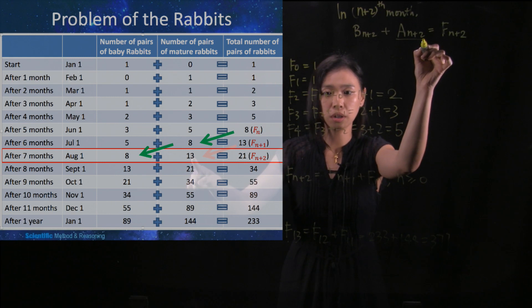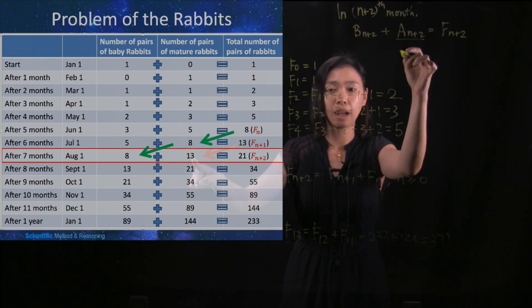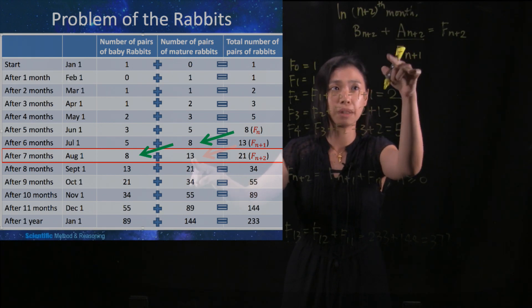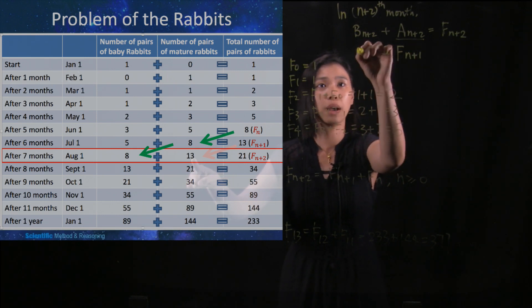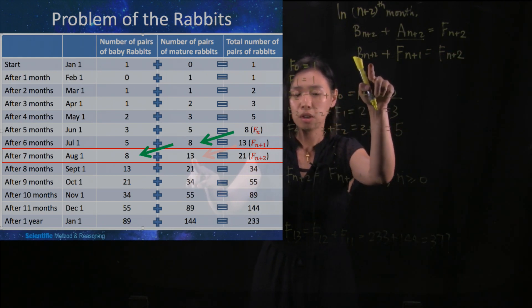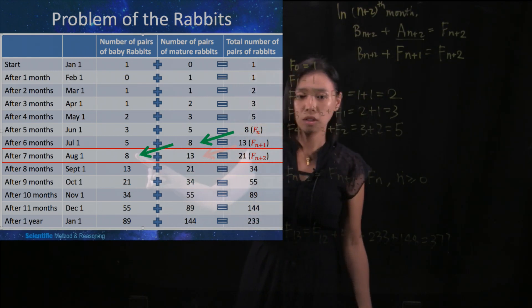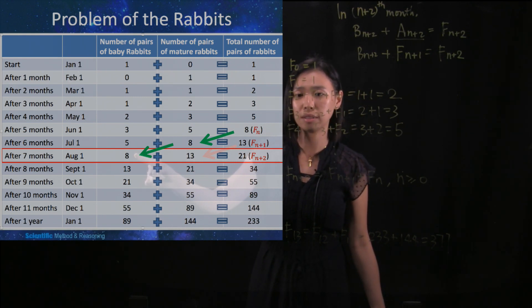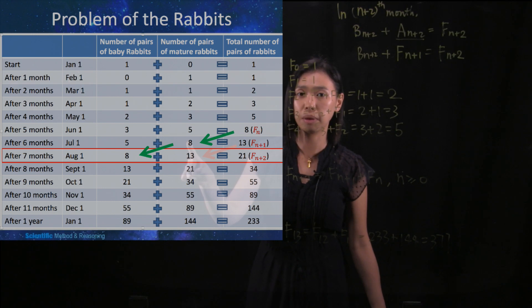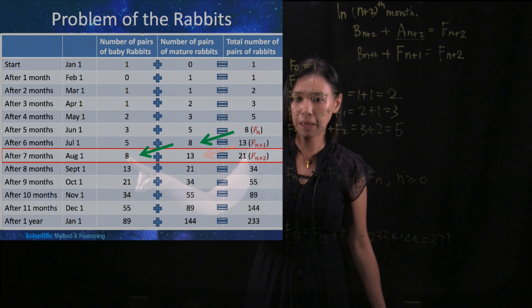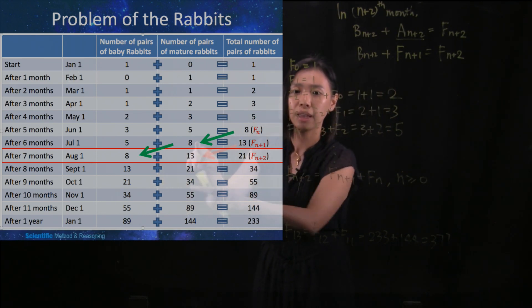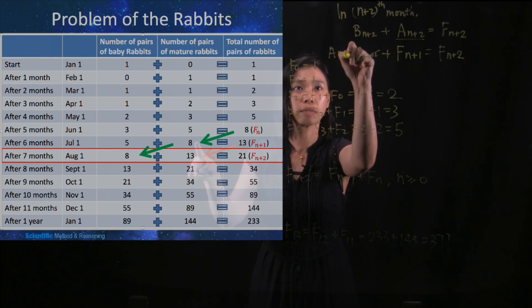So the number of pairs of mature rabbits are all coming from F(n+1) — they are all coming from the total number of rabbits in the previous month, because no matter what they are, they will all become matured. And where do the babies come from? This 8 means we have 8 pairs of baby rabbits. They come from the pairs of mature rabbits in the previous month — those 8 pairs of mature rabbits are ready to give birth to 8 pairs of baby rabbits. So the babies in the n plus 2 months are actually the adults in the n plus 1 month.